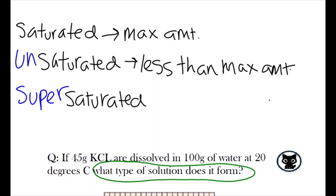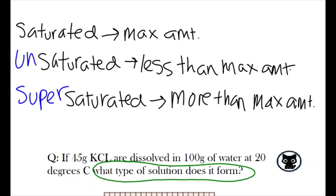An unsaturated solution describes a solution that has less than the maximum amount of solute dissolved, in that it can still dissolve more substances. Back to our paper towel example, if you have a paper towel that is dry, it is completely unsaturated, meaning that you can still absorb some more water and you have not reached your maximum capacity. A supersaturated solution describes a solution that has dissolved more than the maximum amount of solute that it should be able to dissolve — like having a soaking wet paper towel that has reached its maximum capacity still be able to mop up more water.